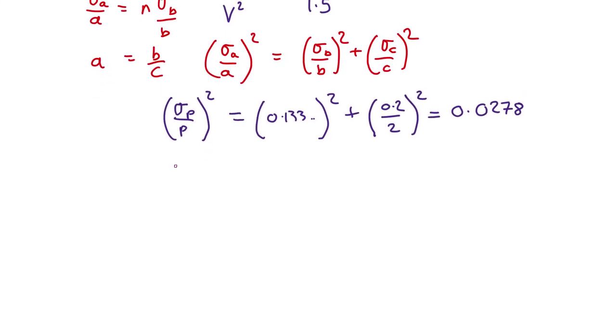So we can take the square root, we get that sigma p over p equals the square root of 0.0278, which is 0.1667.